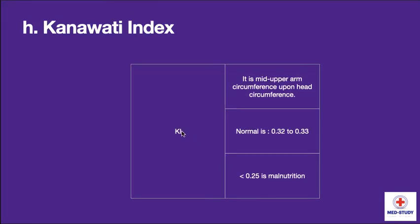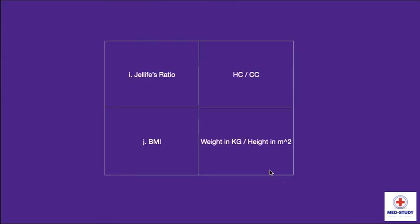Now going to Kaup's index, which is mid upper arm circumference divided by head circumference. The normal value is 0.32 to 0.33, and it is known as malnutrition when it is less than 0.25. The last two parameters are Jeliffe's ratio and BMI. Jeliffe's ratio is head circumference divided by chest circumference. BMI is weight in kilograms divided by height in meters squared.